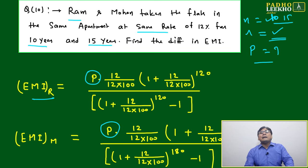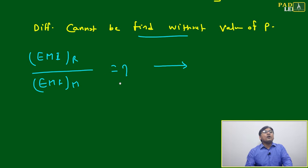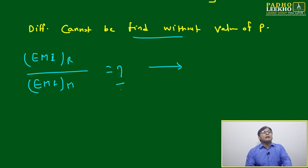Now, principal amount we don't know, due to which we are not able to calculate individual EMI of Ram and Mohan. But if we are taking in the form of ratio, we will be able to find because P will be cancelled out.